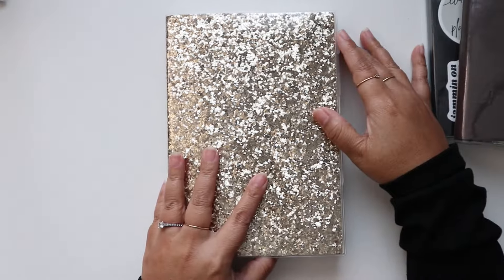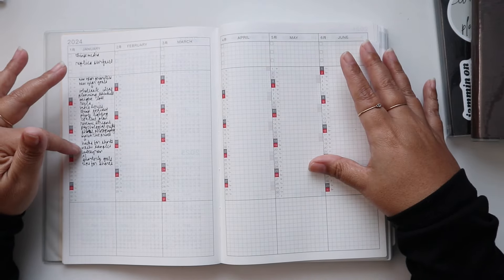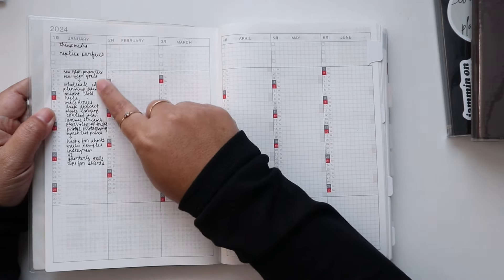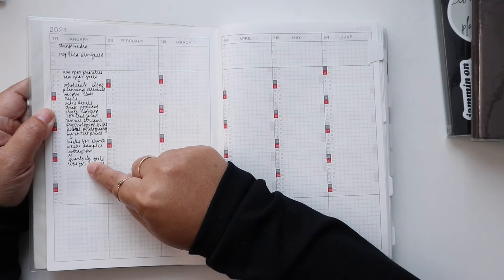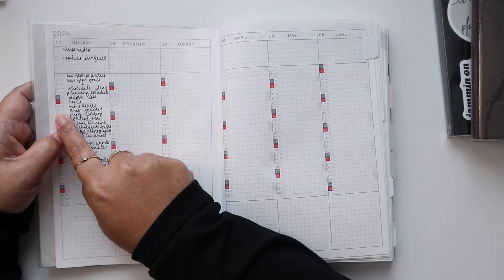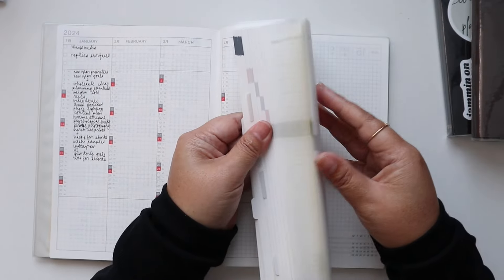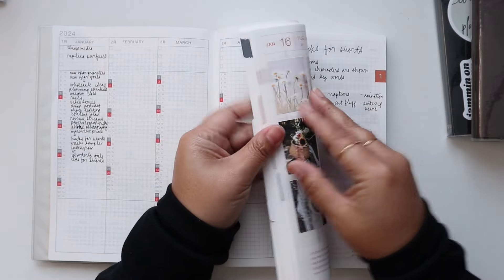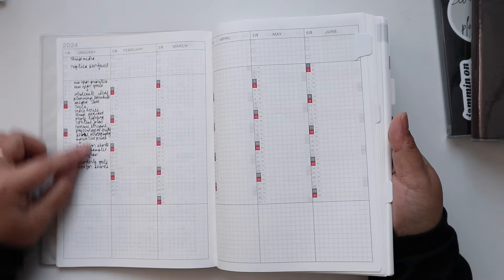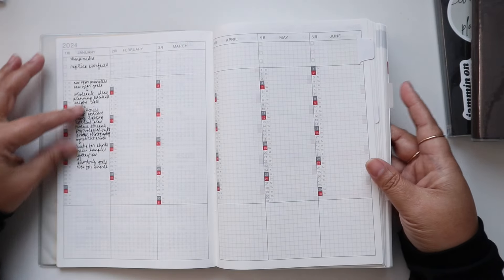And then I have my work slash design planner. This is my Hobonichi Cousin. I mentioned before that I use this perpetual calendar as a table of contents. So all of these topics here correspond to the page back here. Here on January 9th is the THiNK podcast. So if I go back here to January 9th, the THiNK podcast. All the topics here correspond to the pages here and I find that super helpful.